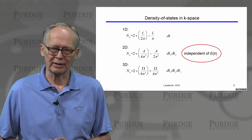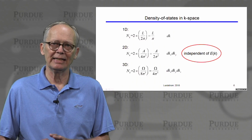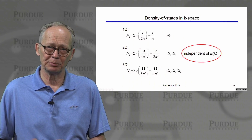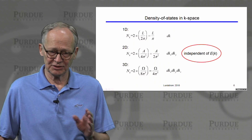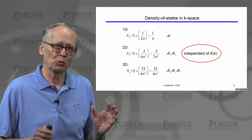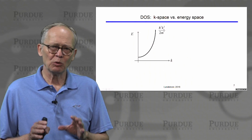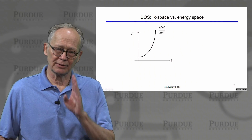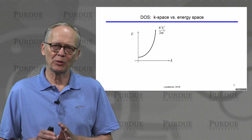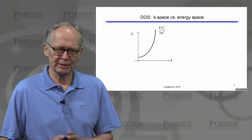Importantly, this k-space density of states applies to any type of band structure — it is independent of E of k. The density of states in k-space is the same no matter what the material is. However, we will more commonly ask how the states are distributed in energy, and then things get a little different.